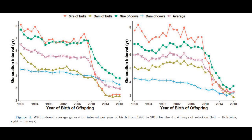Based on this information, it was found that the selective pressure within the Holstein breed in Canada was far greater than the selective pressure in the Jersey breed. This makes sense since the Holstein is the most raised cattle breed in Canada, due to this breed's ability to produce higher yields of milk in dairy farm production. The time between generations for both breeds has declined over time, reaching its lowest point in 2018.